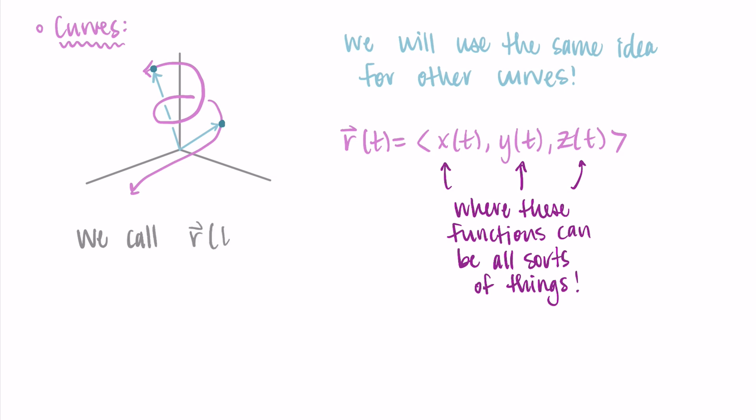So I'll talk more about this in another video, but we call this object, this r(t), a vector-valued function. That's because it takes an input of t, and it outputs this vector. But more on that in another video.